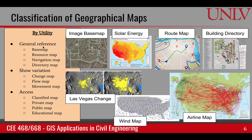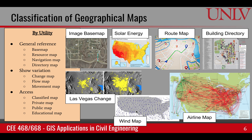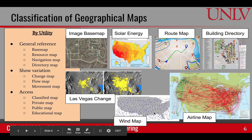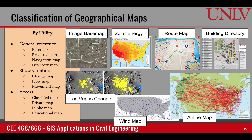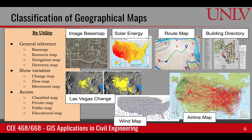Another utility of geographic maps is to show variation. One is to show change — for example, a map of Las Vegas showing change in the urban footprint over time. We can also show flow, such as the flow of air over the US showing how air moves across the country. Another variation is movement of things on the surface, like an airline map showing routes, or a migratory pattern of birds. Other utilities include access-based categories such as classified, private, public, and educational maps.